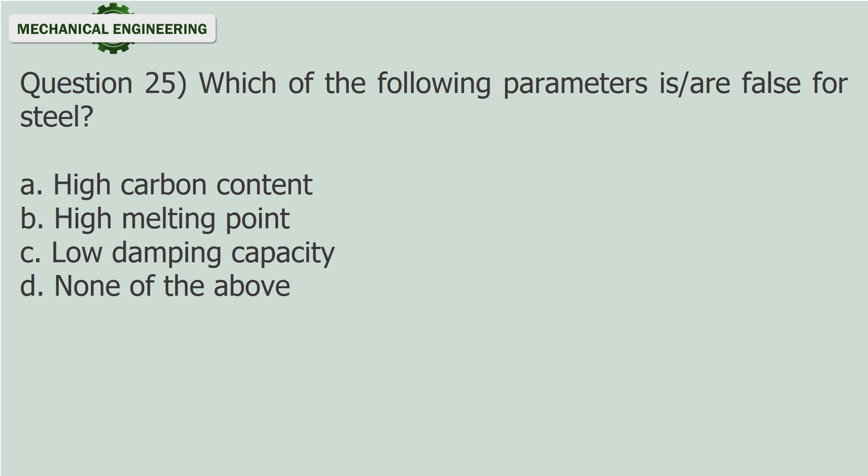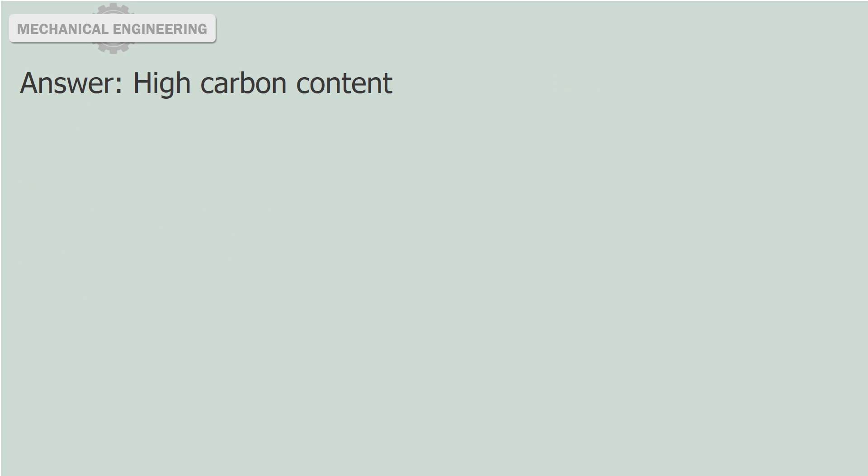Question 25: Which of the following parameters is/are false for steel? A. High carbon content. B. High melting point. C. Low damping capacity. D. None of the above. Answer: High carbon content.